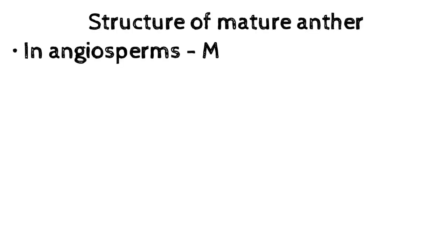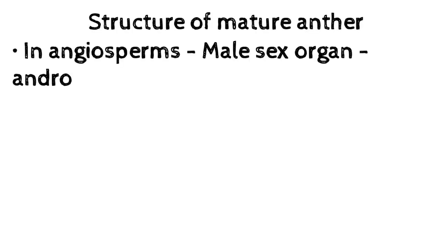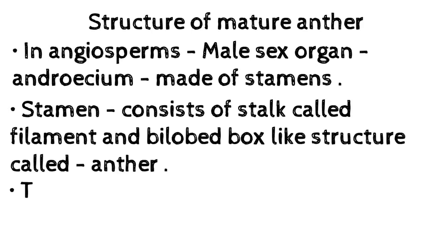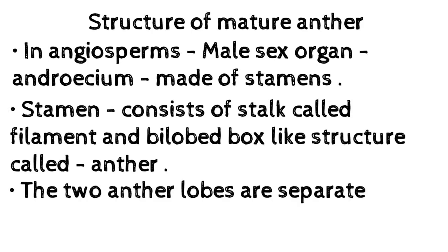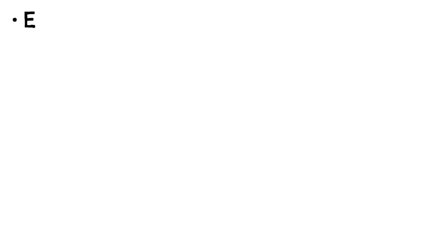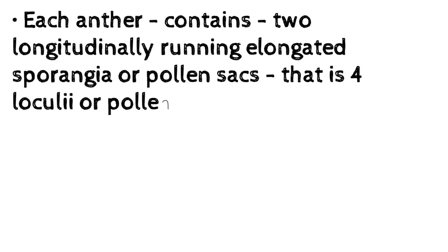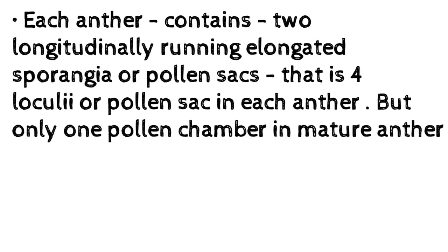In angiosperms, the male sex organ is the androecium, made of stamens. A stamen consists of a stalk called filament and a bilobed box-like structure called anther. The two anther lobes are separated by connective tissue. Each anther contains two longitudinally running elongated sporangia or pollen sacs, giving 4 locules or pollen sacs in each anther.